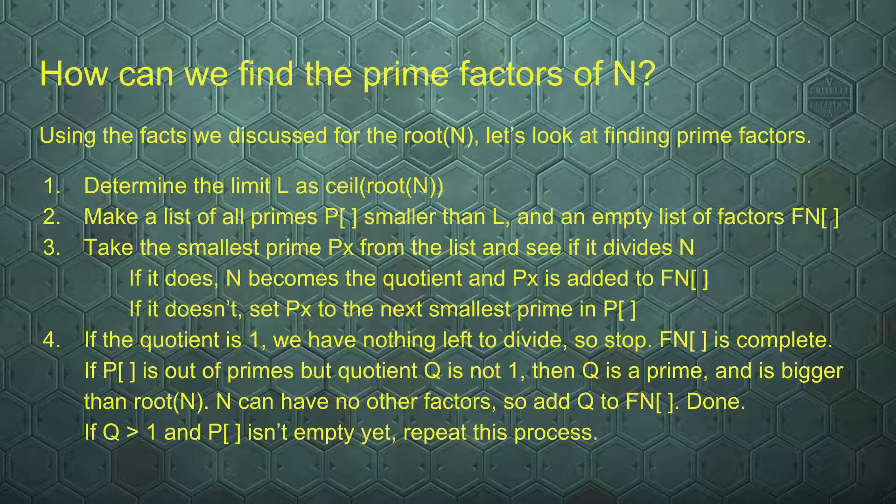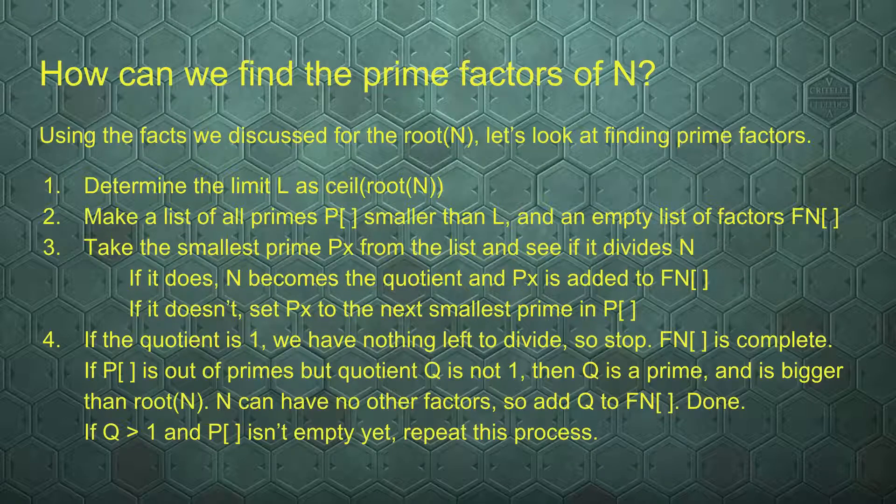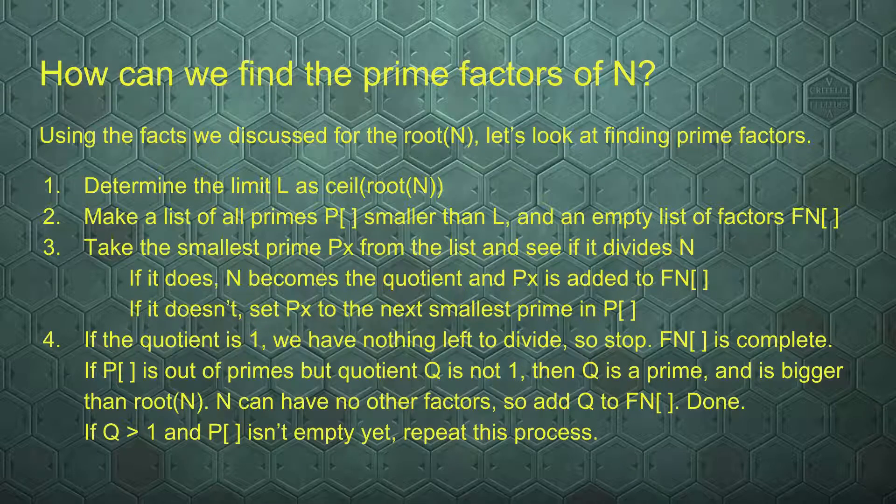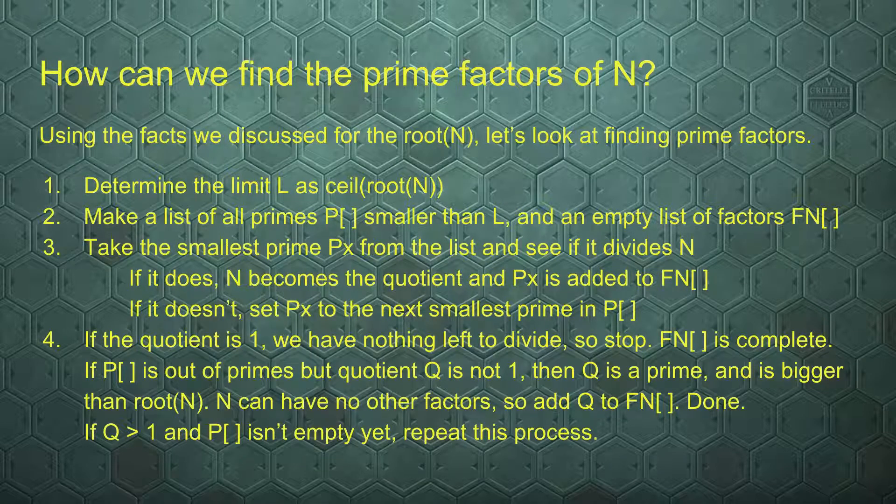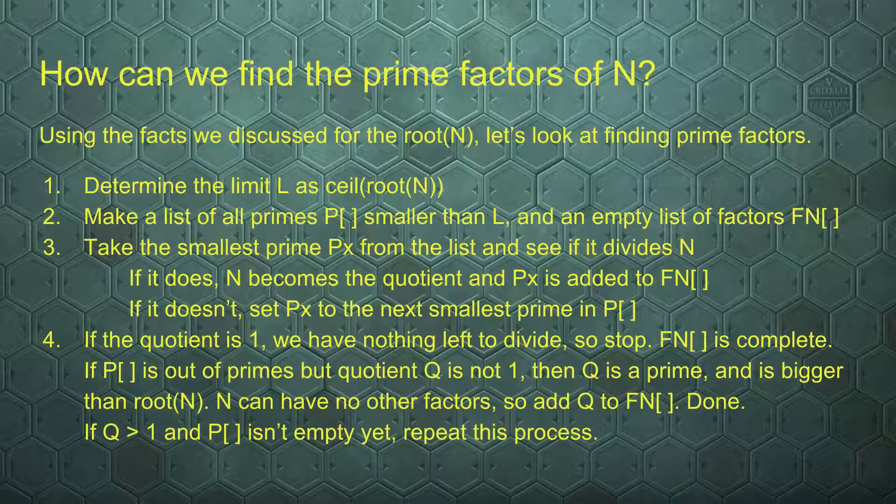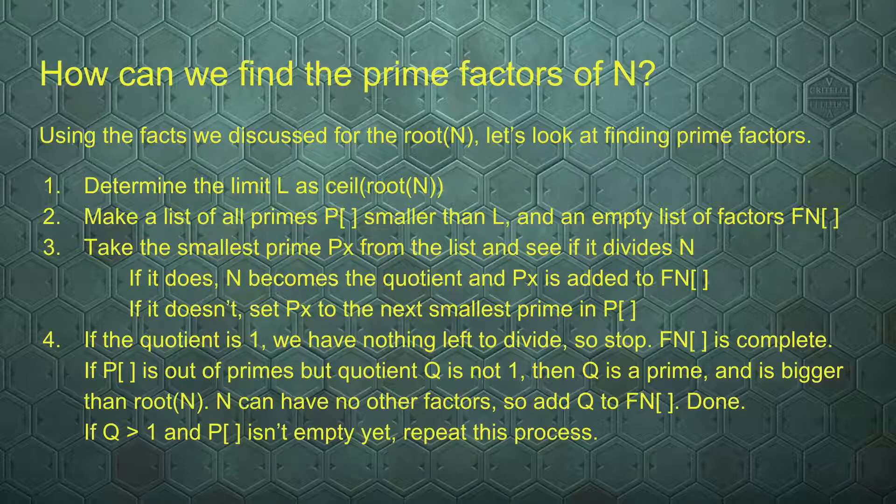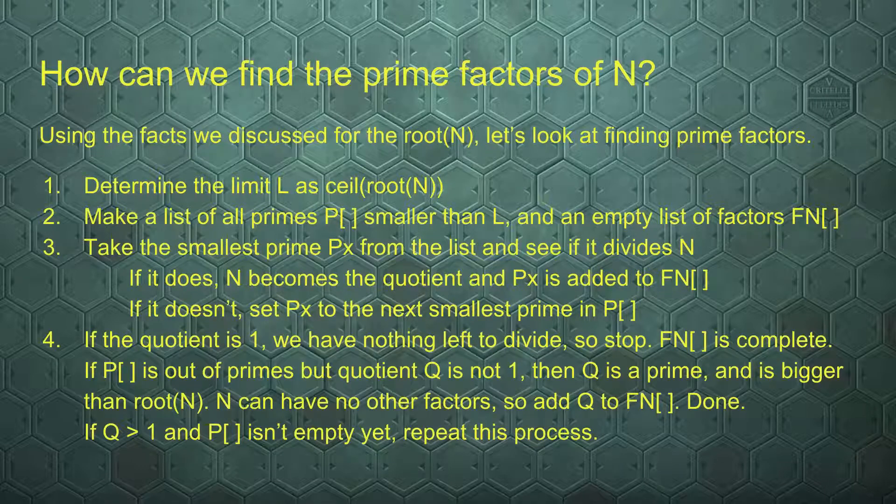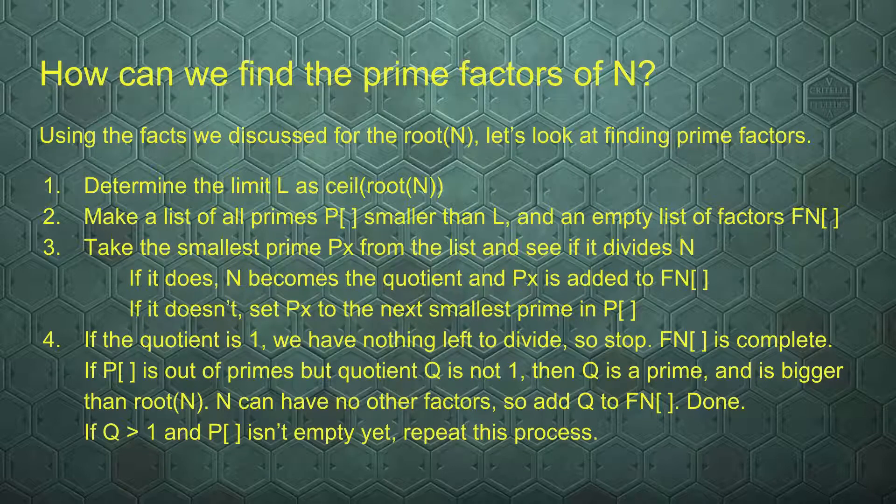Take the first smallest prime Px of that list and see if it divides n. If n is divided, then we change the value of n to the quotient, so to how many times our prime fit into n. And we also add the prime that we used to the list of prime factors. If Px does not divide n, then we change the value of Px to the next smallest prime available in the list of P. So if we were testing 2 and it doesn't divide, we skip to 3.